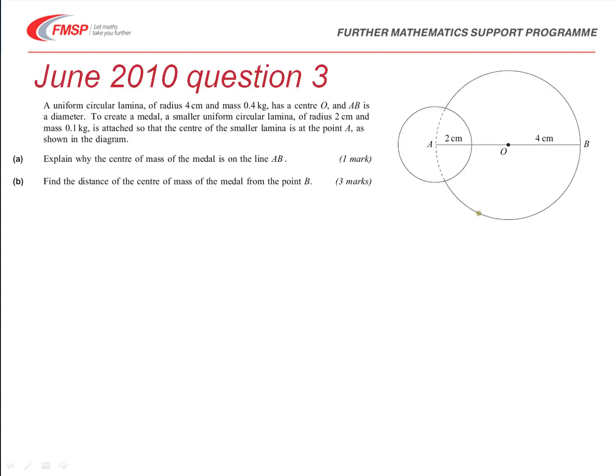As you can see, we are given circular uniform lamina, one of radius 4 centimetres, and then a second one of radius 2 centimetres, which is attached at the centre through the point on the edge of the circle, as indicated at A. We are given the mass of each of these lamina, and the first part then asks us to explain why the centre of mass of the model is on the line AB.